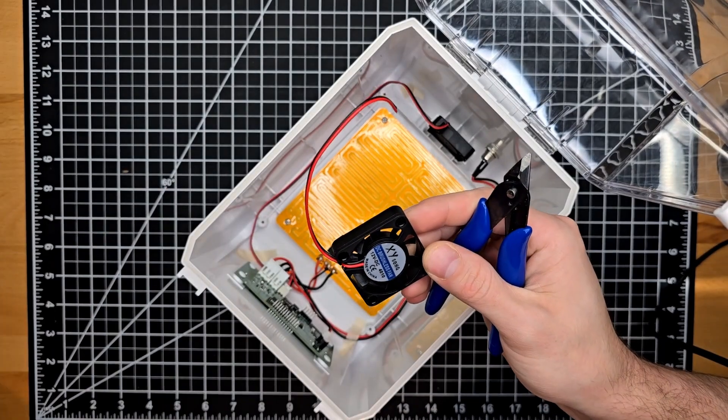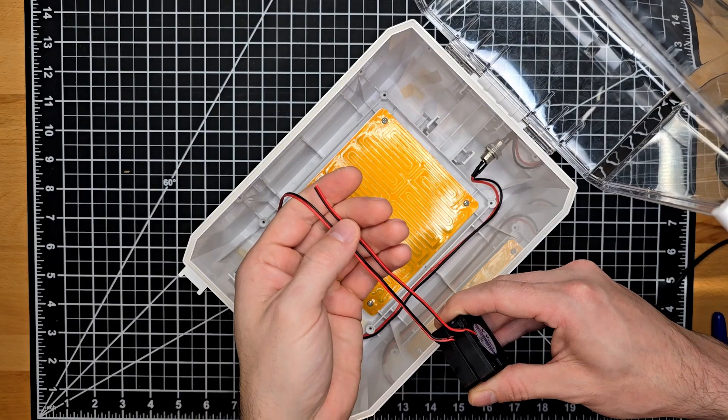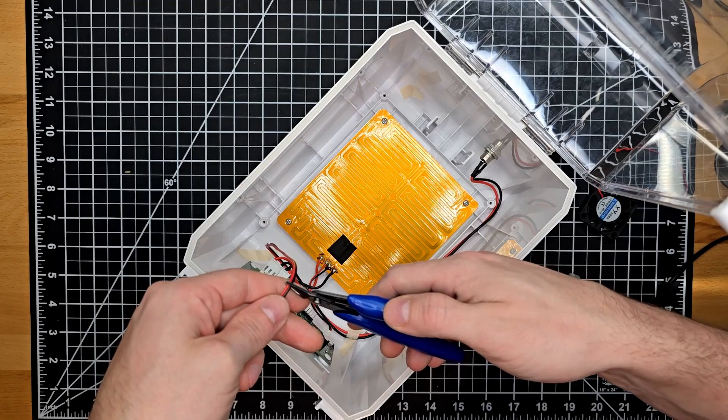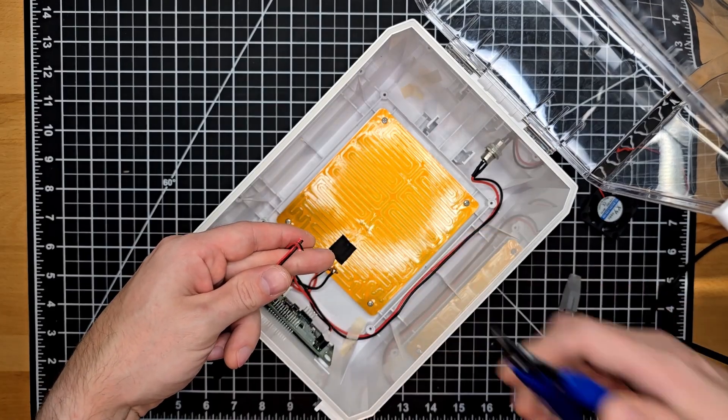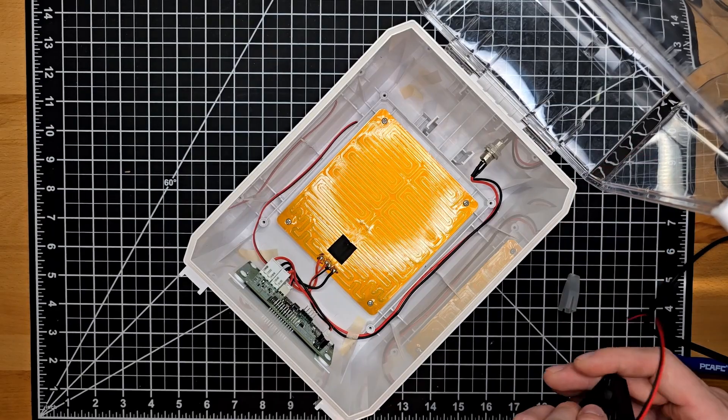By snipping the fan I'm able to go ahead and match it up against the existing fan and wire set and snip it in the same location. With that trash removed we can carry on to the following steps.